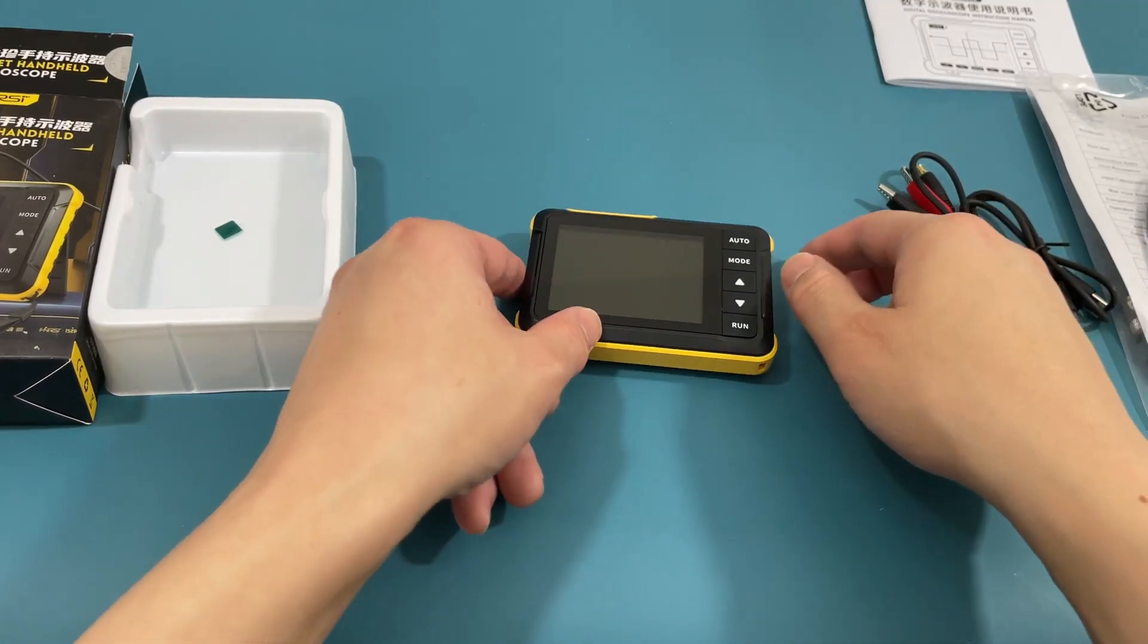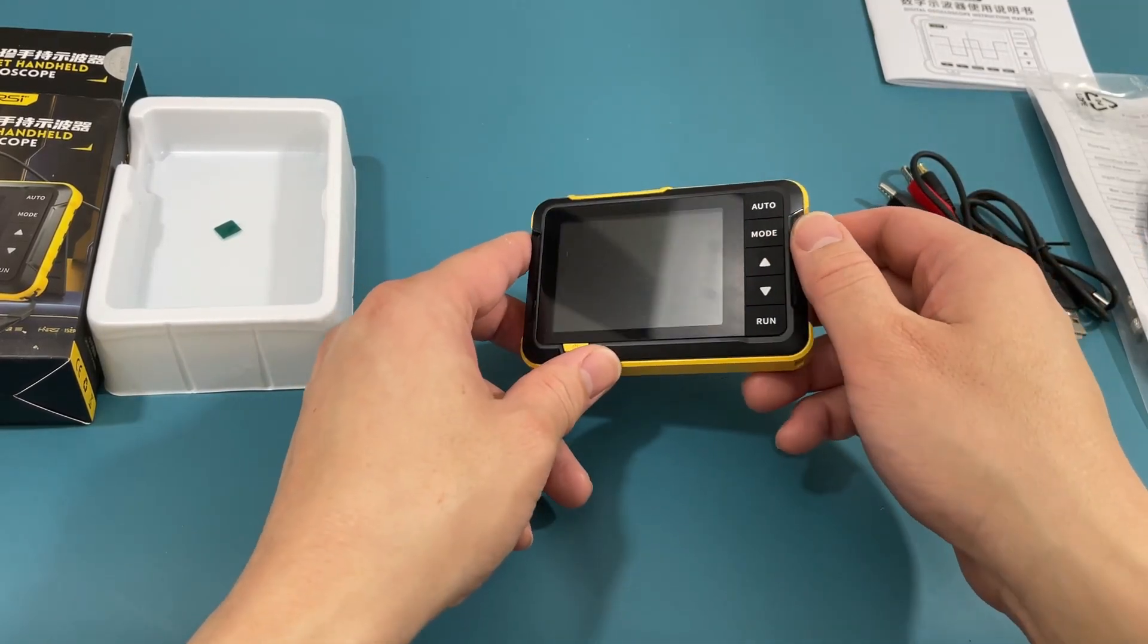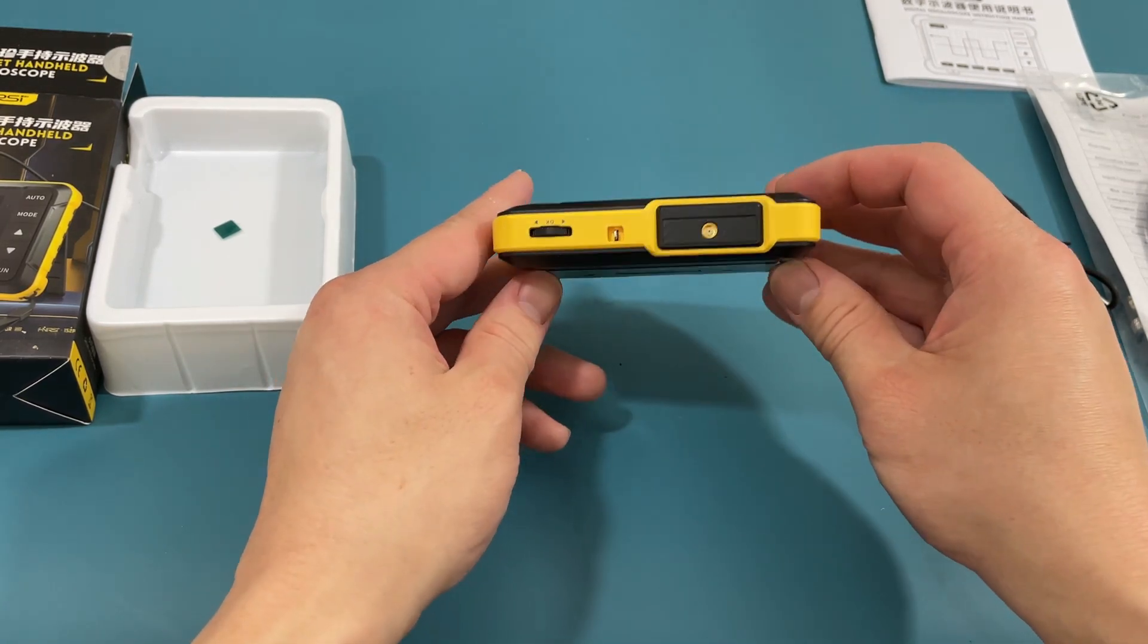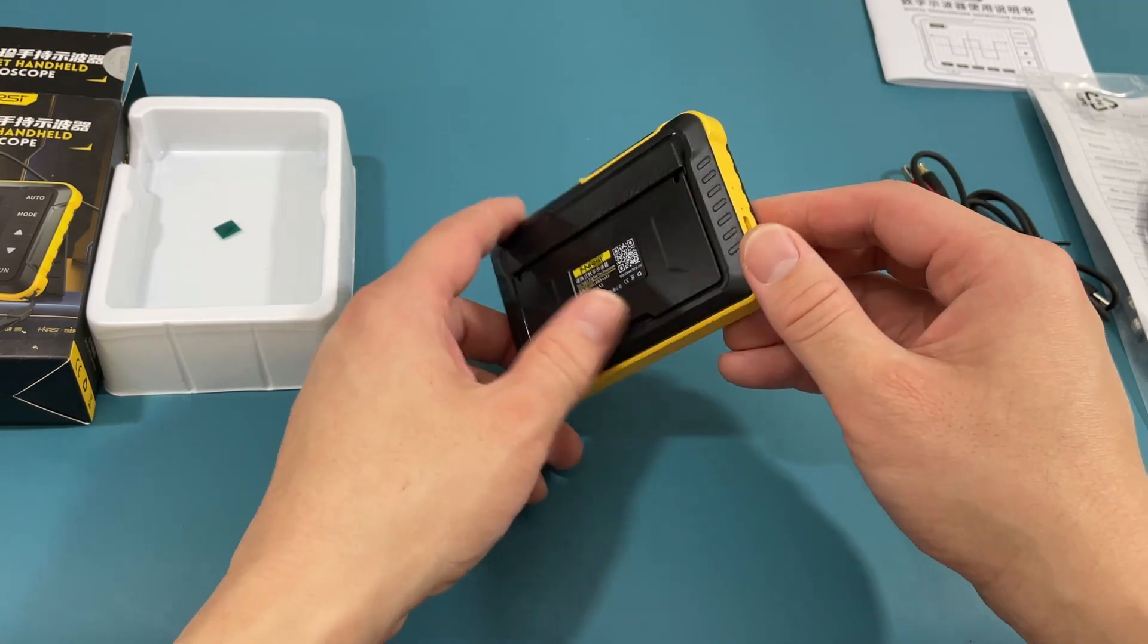Let's first take a look at the oscilloscope. On the top is the signal input interface. This is where you connect your probe.